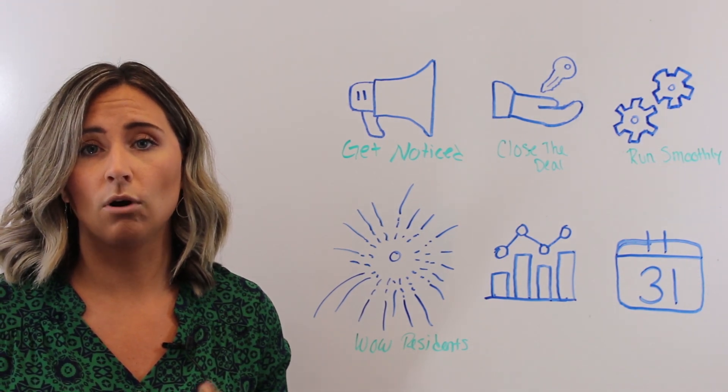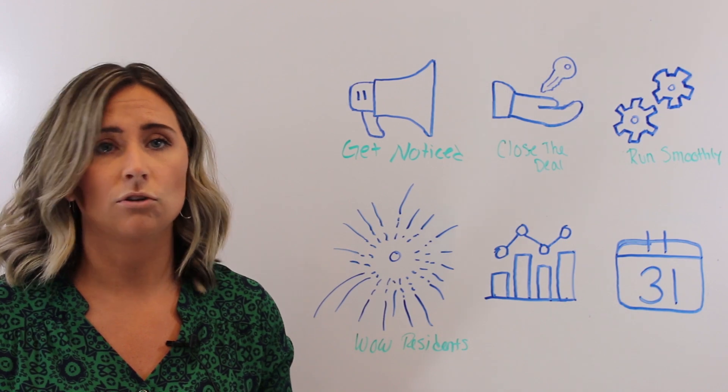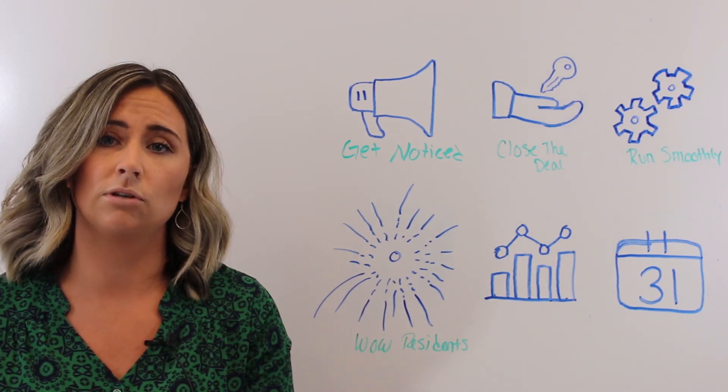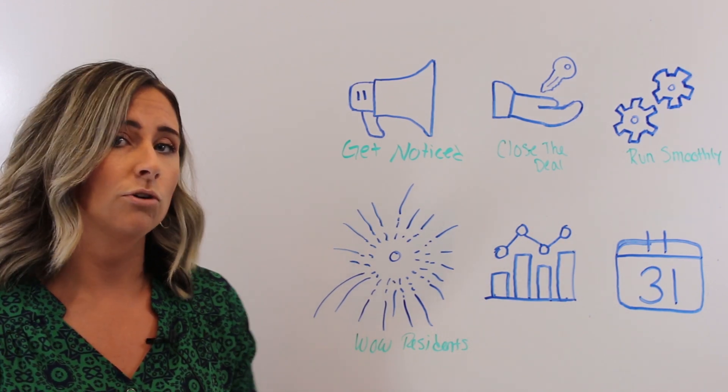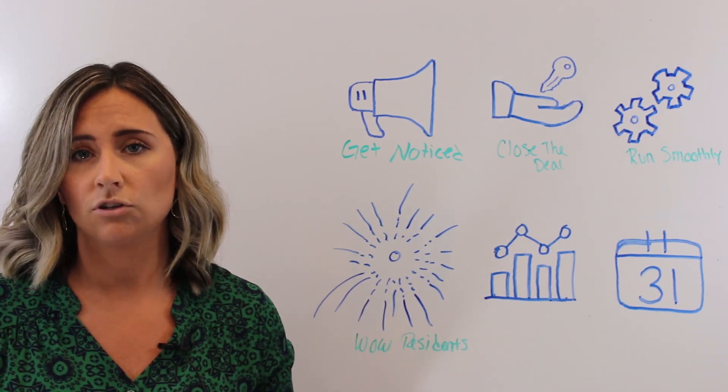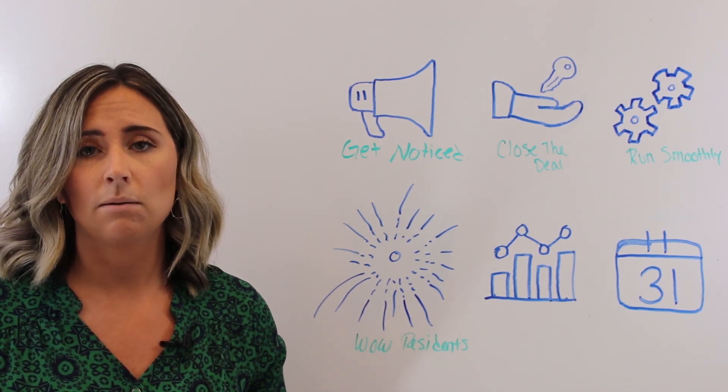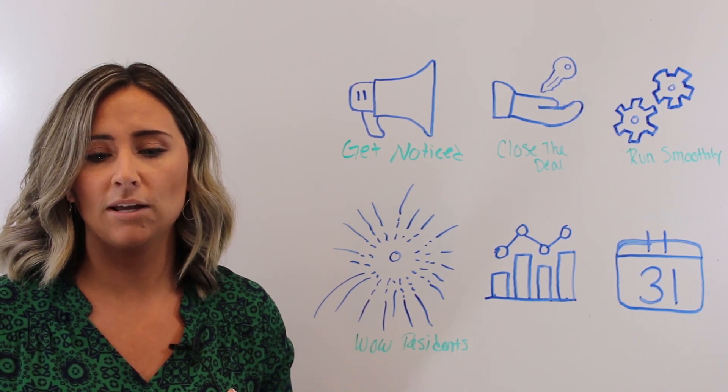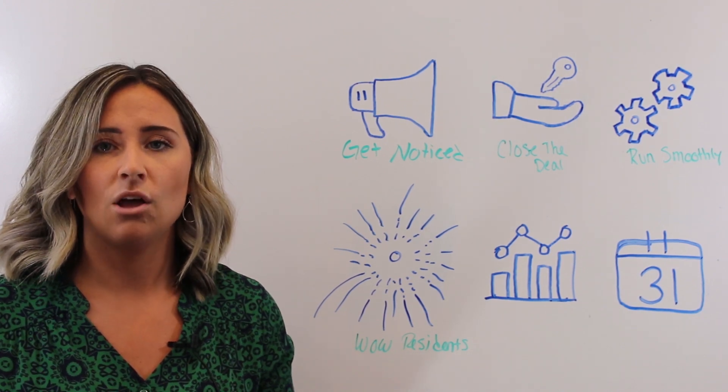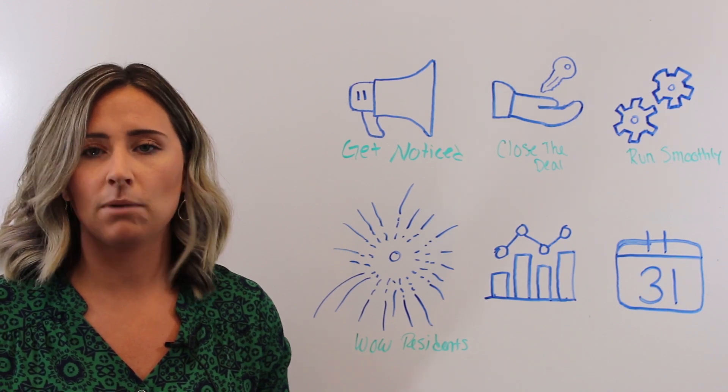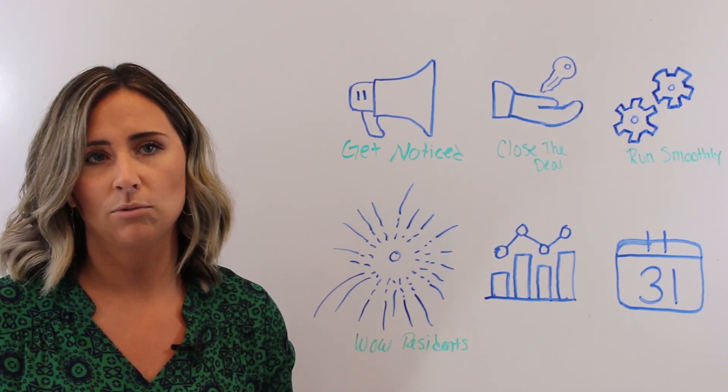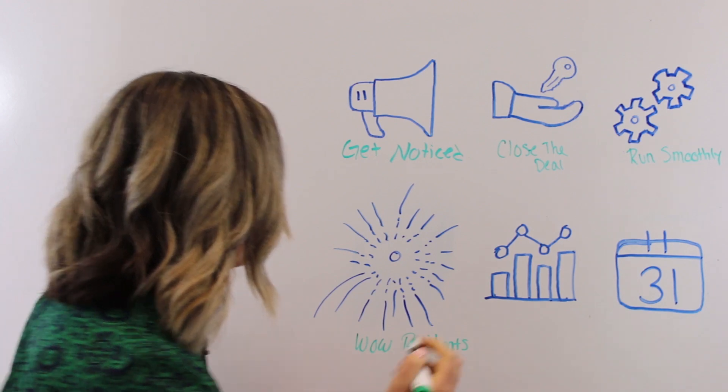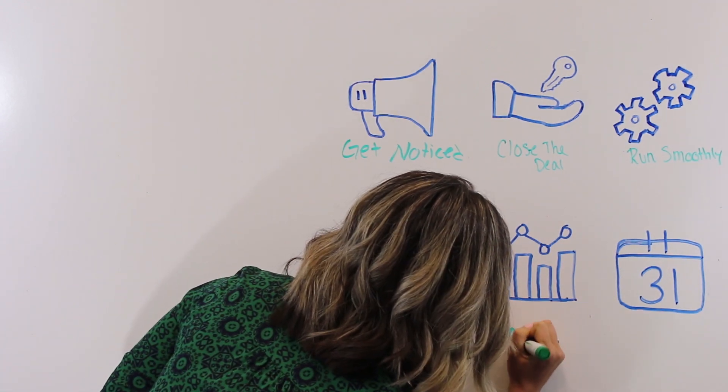You need to wow your residents with great self-service tools and give them 24/7 access to your community so they can find information about any maintenance requests, renewals, make payments, as well as any upcoming events either at your property or in the community. And then the next stage is Know the Score.